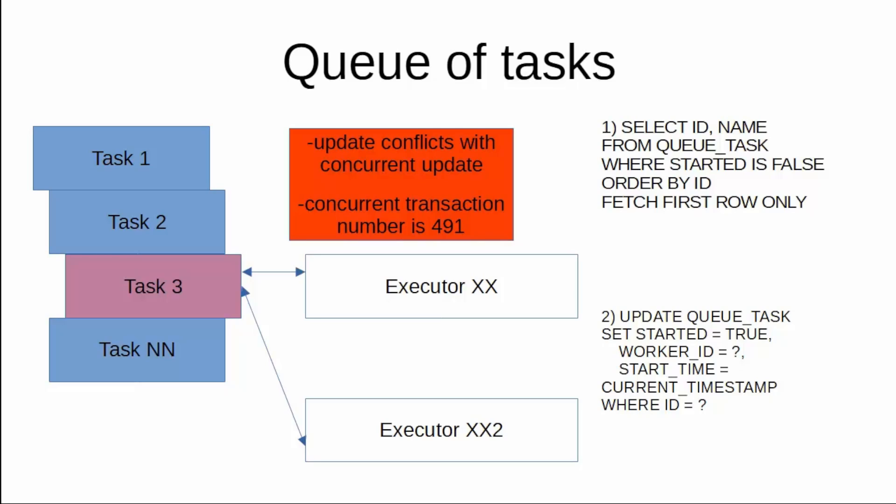They actually tried to pick up the first outstanding task. However, when two executors — two workers — are trying to do the update operation on the same record, one will always be first and will occupy the record, and the others will just get this update conflict. Of course, it depends on the transaction parameter wait or no-wait, but in our situation, as you can see in the article, we will immediately get the conflict.